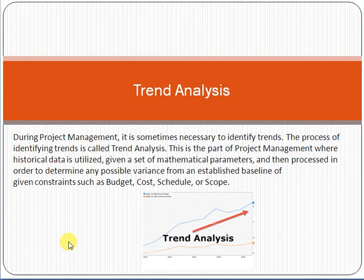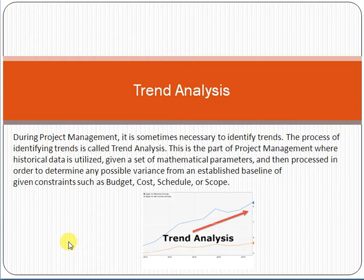So trend analysis means we analyze the historical data of a project — the existing performance with reference to schedule, time, and cost, such as how many months it took to complete a particular task and at what cost. Based on that past data and mathematical calculations, we forecast expected values for the future. Analyzing historical data and using mathematical calculations to forecast expected values of time, cost, budget, and schedule — that is the concept of trend analysis.